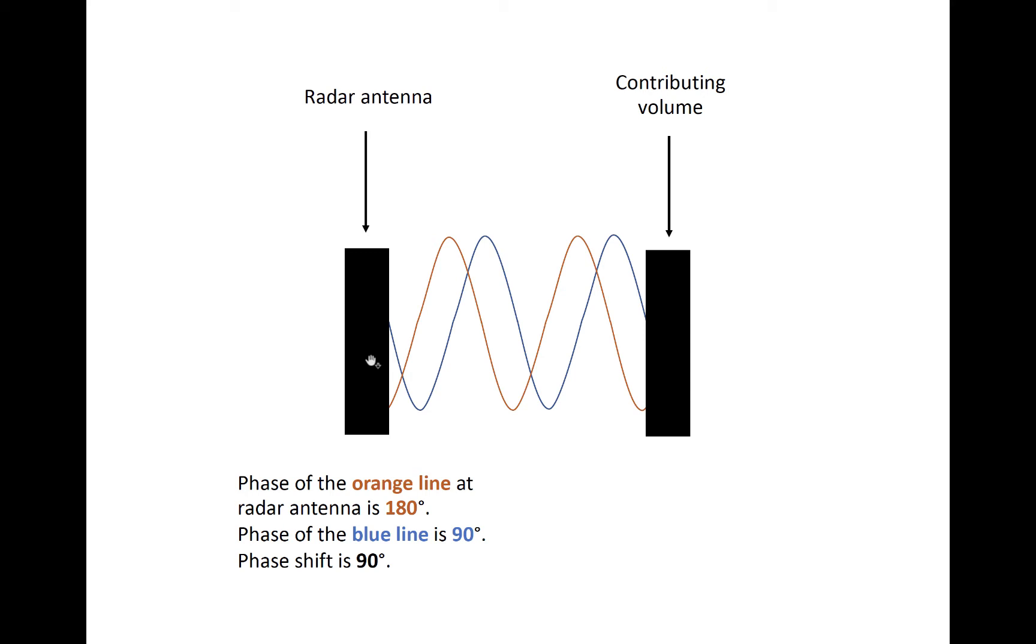If hydrometeors are moving, that phase will change between successive pulses. That's the phase shift that we're after. And it is the phase shift that we'll insert into the equation on the previous slide to derive the radial velocity. If the hydrometeors are moving neither toward nor away from the radar at all, then the phase shift will not differ between successive pulses.